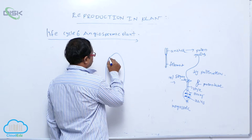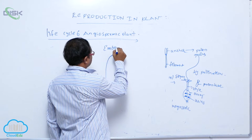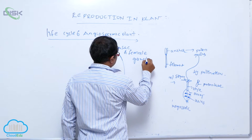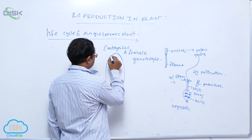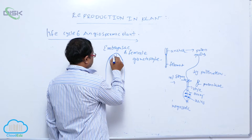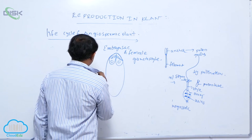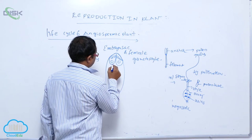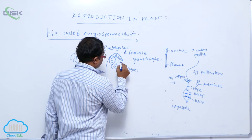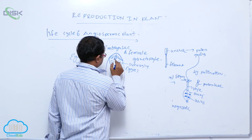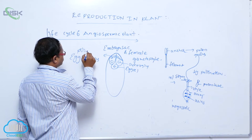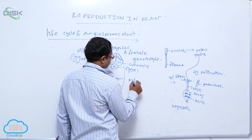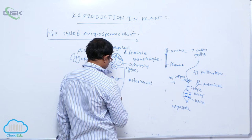The embryo sac is also known as the female gametophyte. It mainly has three parts: the synergids, the egg cell, and the polar nuclei. The synergids have filiform apparatus. After that there are antipodal cells.